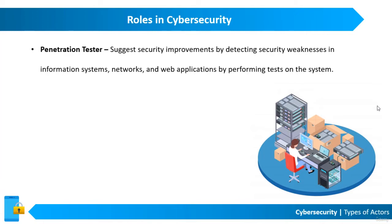According to the Bureau of Labor Statistics, the average salary of information security analysts or penetration testers between 2018 and 2019 was around $100,000 per year in the United States. This number is subject to change based on factors like experience, profile, knowledge, degree, and certification.